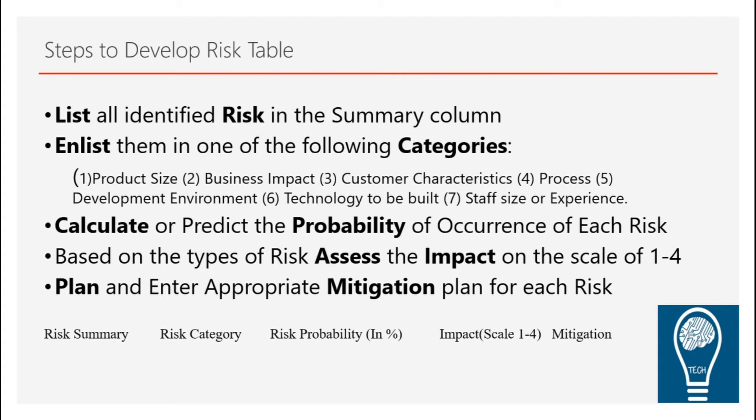As you can see in the table below, the columns include: risk summary, risk category, risk probability (expressed as a percentage), impact scale (rated 1 to 4), and the mitigation plan.